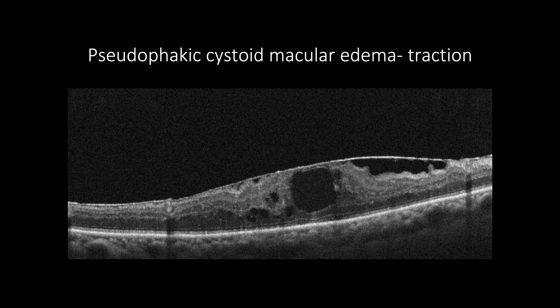OCT is very useful in revealing vitreo-macular interface abnormalities, such as the presence of vitreo-macular traction or epiretinal membrane, with increased macular thickness and intraretinal cystic formation. It can be associated with cases of post-complicated cataract surgery with incarcerated vitreous strands at the wound, or cases with pre-existing vitreo-macular interface abnormalities.